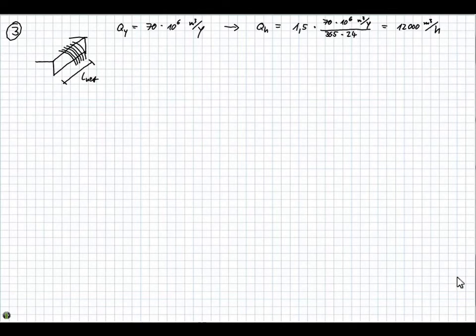And this can also be written as Q per hour equals specific flow, small q, times L net. And this specific flow I am going to indicate in the drawing real quick because this is a flow per unit length, which means one unit length being one meter. And this specific flow usually has a value between 50 and 100 square meters per hour.